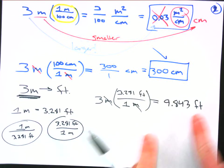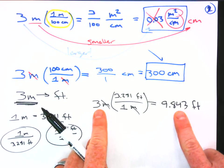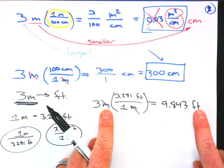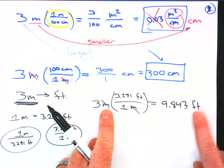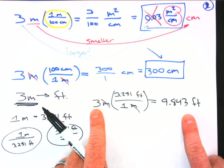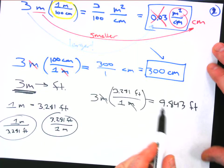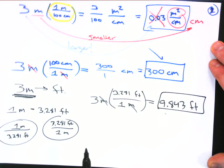So check this out. Can I do the whole unit got smaller so the number must get bigger thing? Well, yeah, I kind of can. A foot is shorter than a meter. So the unit did get smaller. And that means the number did get bigger. Now it's not by like an even nice increment like this was, but it still works. It's a good way to check.